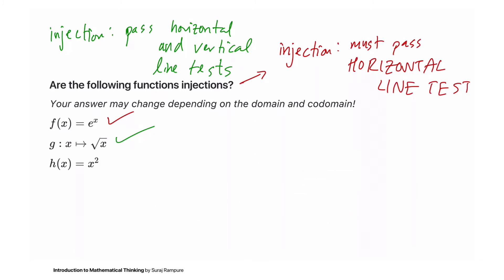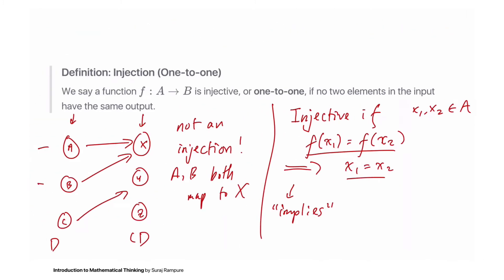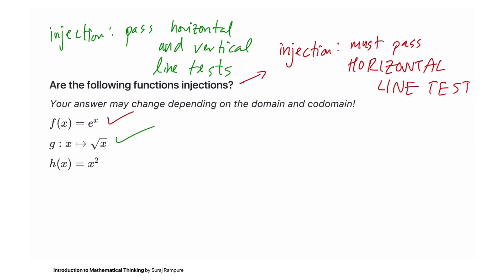We could also show these are injections algebraically: for f, if e^a = e^b, we know for sure that a = b. And if √a = √b, we know for sure that a = b.